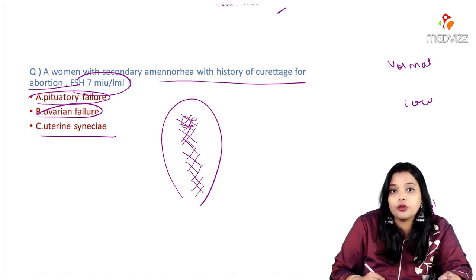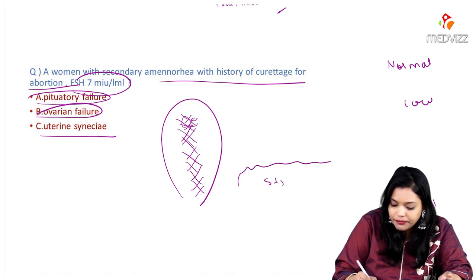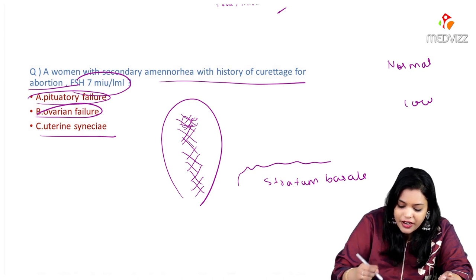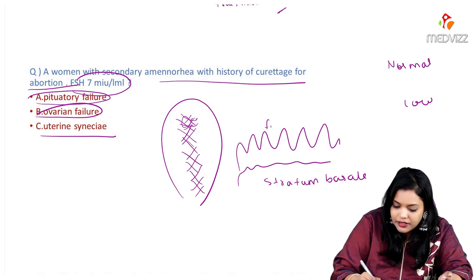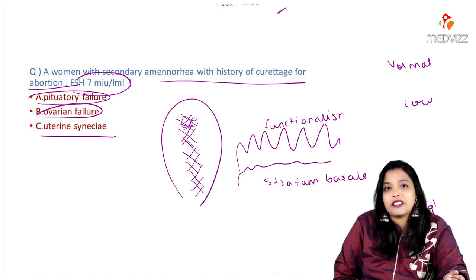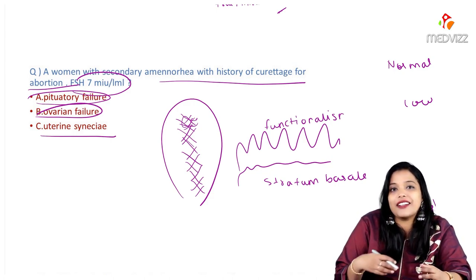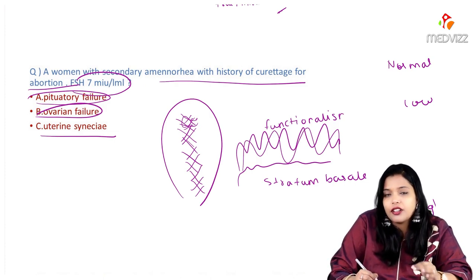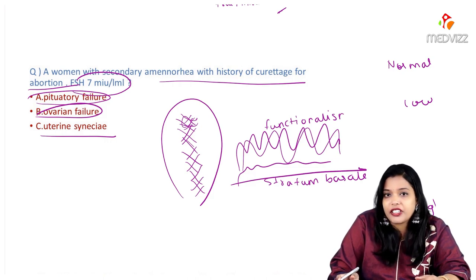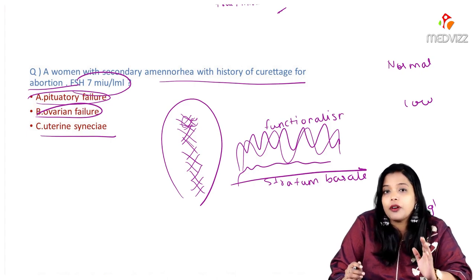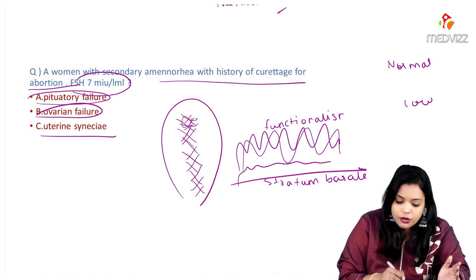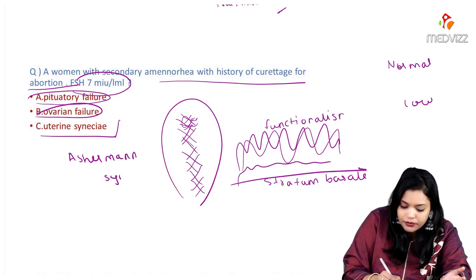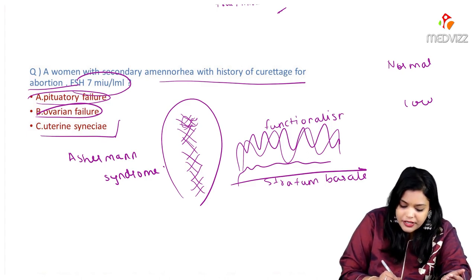Uterine Asherman's syndrome is the formation of adhesions inside the uterus — adhesion of the anterior and posterior wall. Normally the endometrium has a stratum basale layer which regenerates the stratum functionalis. When excess curettage destroys the basale layer, the functionalis cannot regenerate, and the anterior and posterior walls adhere. This is called uterine Asherman's syndrome.